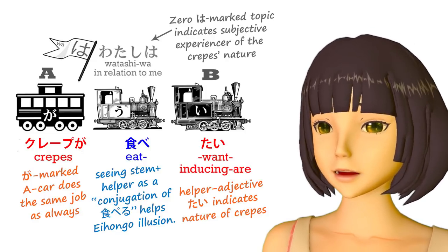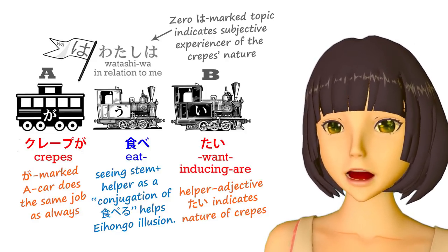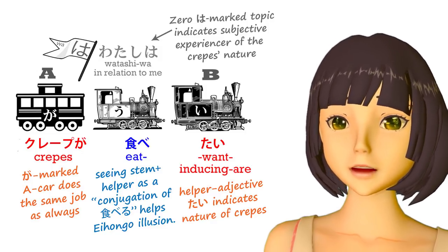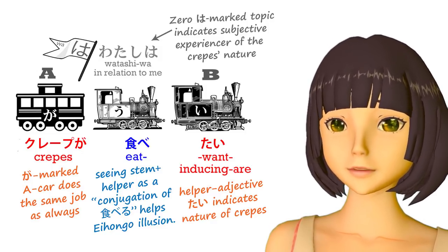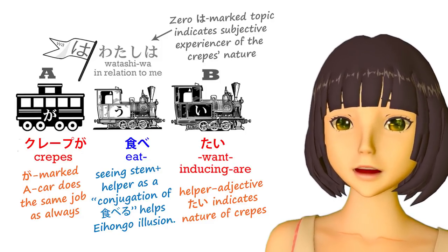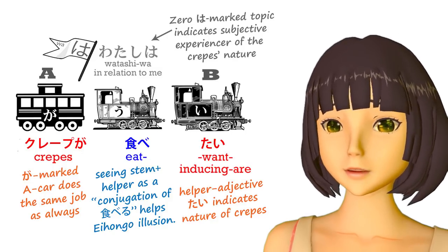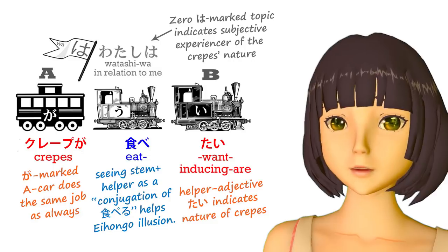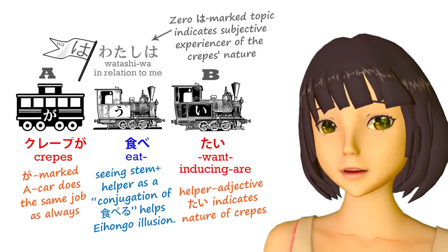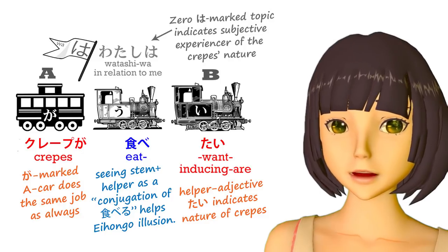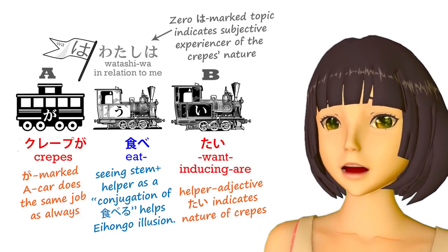It's just that the subject, the doer, the A-car of the sentence in Japanese is not the same as it would be if an English person tried to express the same sentiment. The subject of the sentence is the crepes. They are the one that's doing the eat-want-inducing to the experiencer. And if we understand this, we don't have to say that ga marks the subject some of the time. We can see that ga marks the subject all the time. And we don't have to start saying that there's no such thing as a subject in Japanese, because the only language in which there's no such thing as a subject is wang-wan and nyan-nyang language. Human language has to have subjects and predicates or it ceases to be language.